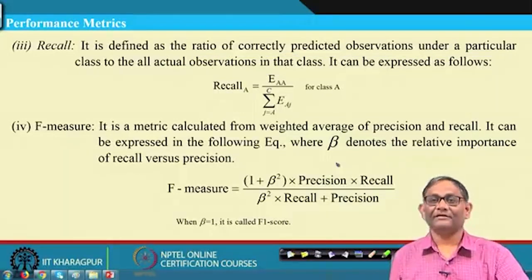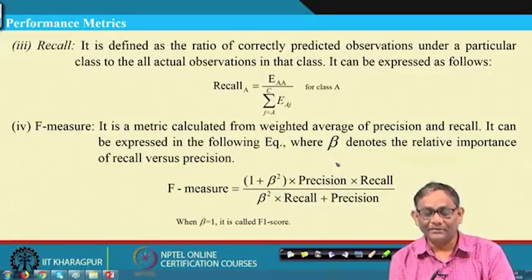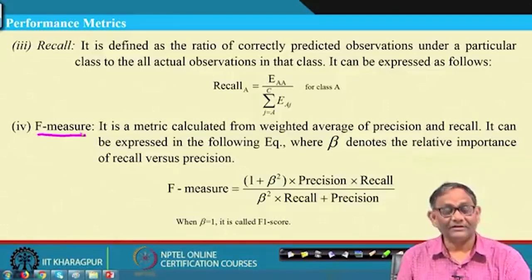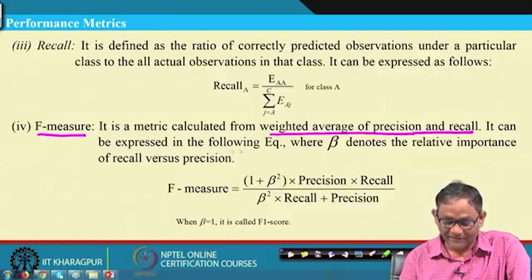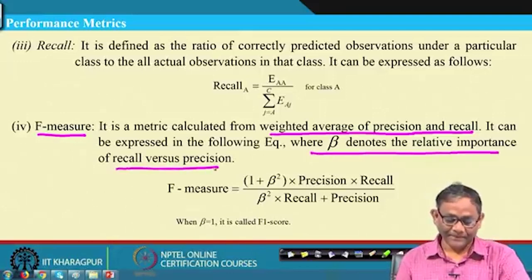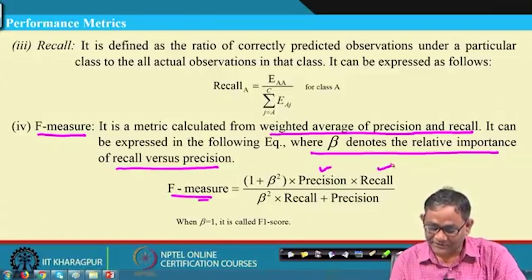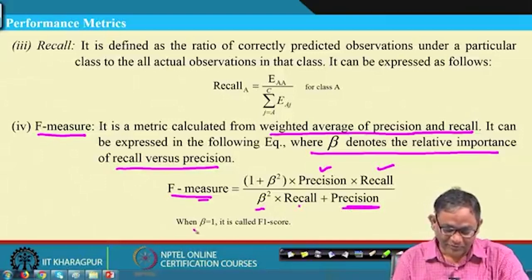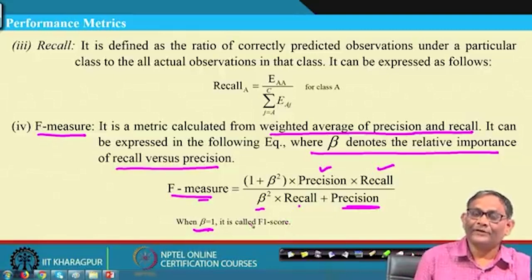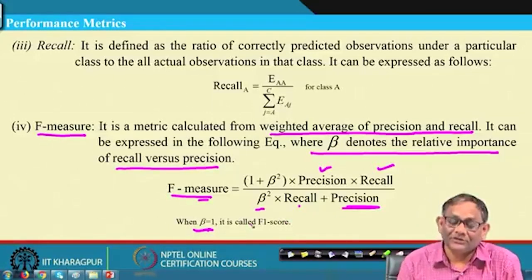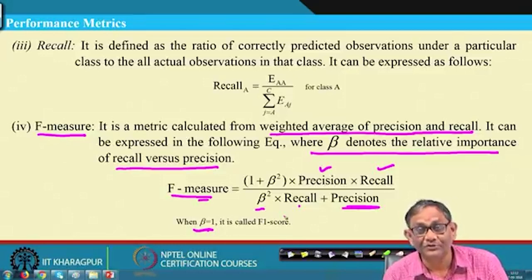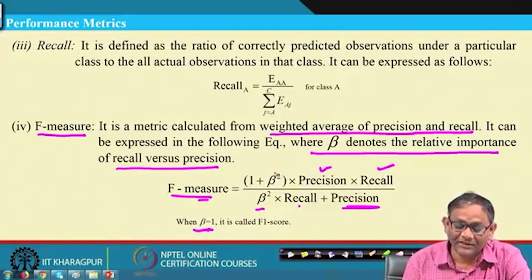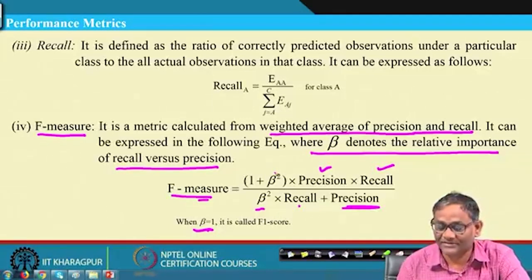Precision and recall are combined into a metric known as the F-measure or F-score. It is calculated from the weighted average of precision and recall: F = (1 + β²) × (precision × recall) / (β² × recall + precision), where β denotes the relative importance of recall versus precision. When β = 1 it is the F1 score. The F1 score is the most commonly used form, combining both important performance metrics.